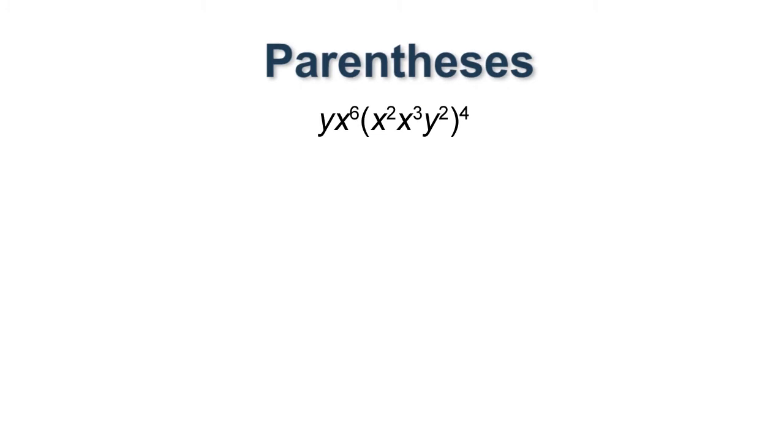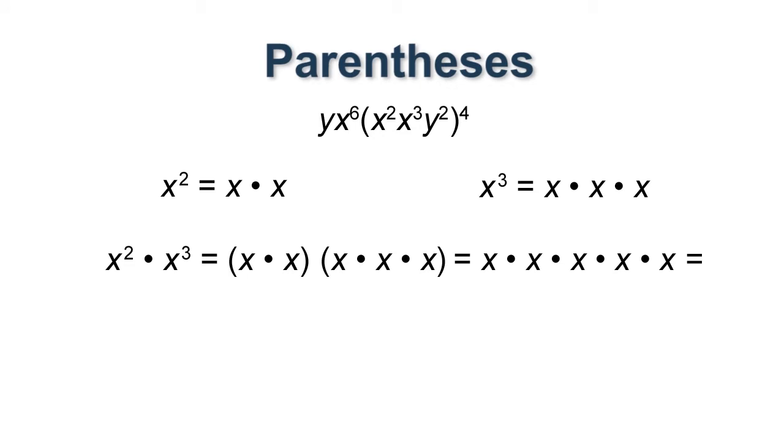Inside the parentheses, we have an x squared and an x cubed, which we can combine. Remember, exponentiation is just repeated multiplication. x squared is x times x, and x cubed is x times x times x. When we multiply our two terms, we get five x's multiplied together, or x to the fifth.